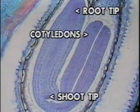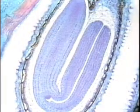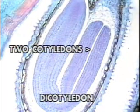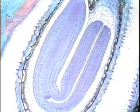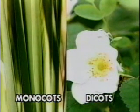A seed may have one or two cotyledons. A plant that produces seeds with one cotyledon is called a monocotyledon, or monocot. A plant that produces seeds with two cotyledons is called a dicotyledon. There are significant differences between monocots and dicots beyond the number of cotyledons, making this one of the major divisions of angiosperms.